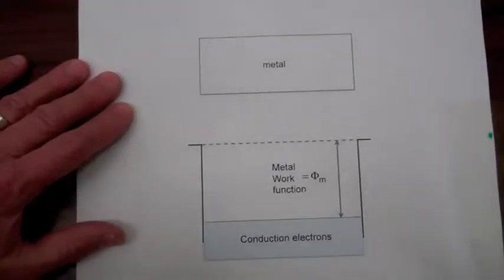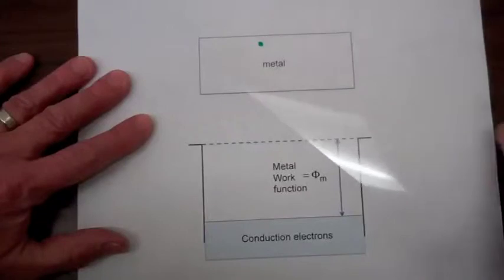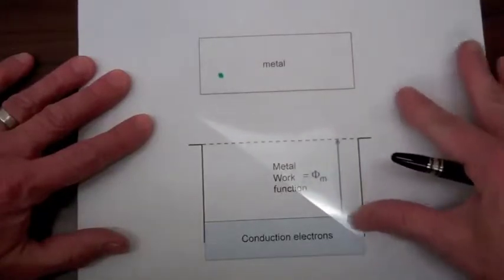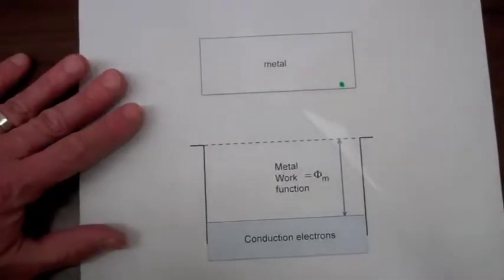The conduction electrons in a metal are free to move around, so we can think of the electrons as if they're in a box. When the electron encounters the edge of the metal, it cannot get out because of a potential barrier.